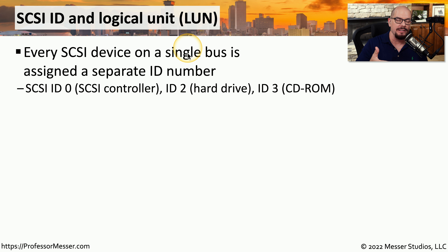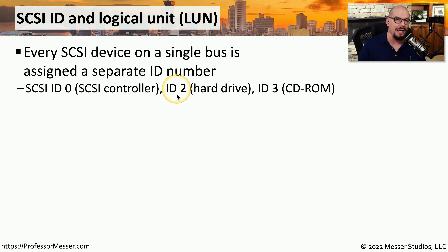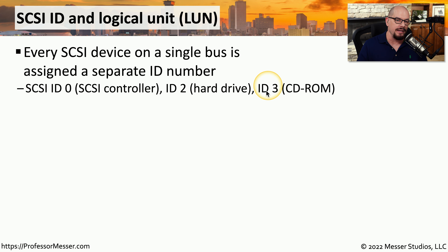Every device you connect to that particular SCSI cable would have a separate ID number associated with it. So your computer might be SCSI ID 0. You might be connecting a hard drive on that cable, which can be assigned an ID number of 2. And you might have another device on that cable, such as a CD-ROM, and you would assign a separate SCSI ID to that device — for example, SCSI ID 3.